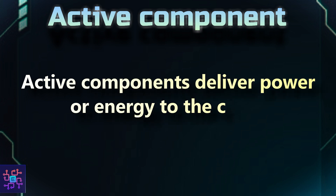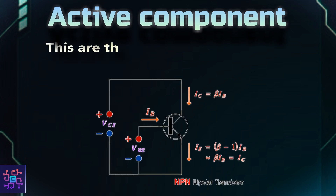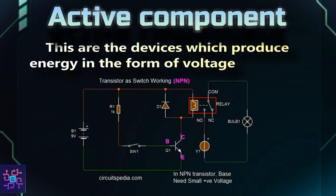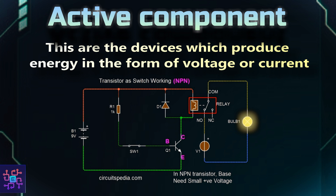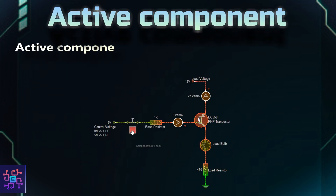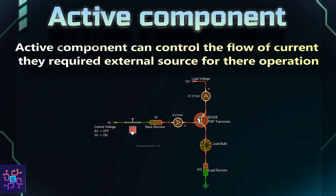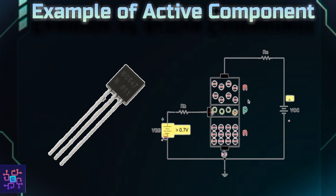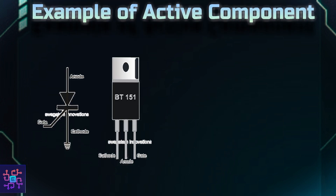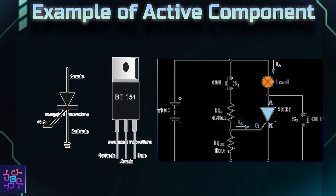Active components are devices which produce energy in the form of voltage or current. They can control the flow of current and require an external source for their operation, so they are energy donors in the circuit. Examples of active components are transistors and SCRs. You may not be aware of these two components, but there is one you might have heard of: IC, which is integrated circuit.